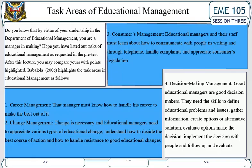3. Consumers management: Educational managers and their staff must learn about how to communicate with people in writing and through telephone, handle complaints, and appreciate consumers legislation. 4. Decision management: Good educational managers are good decision makers. They need the skills to define educational problems and issues, gather information, create options or alternative solutions, evaluate options, make the decision, implement the decision with people, and follow up and evaluate.